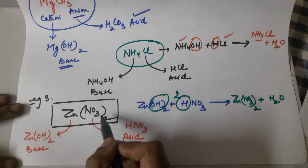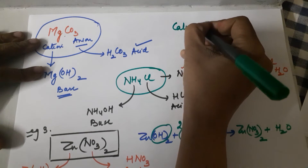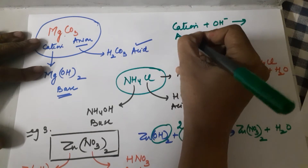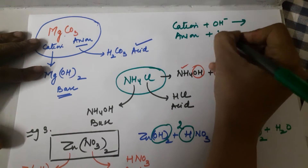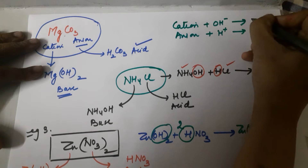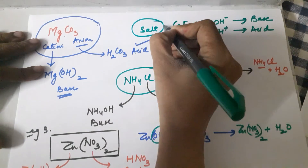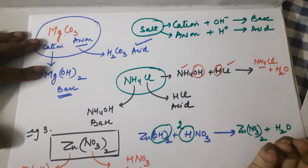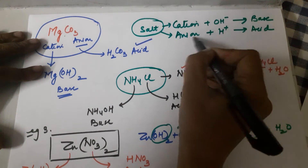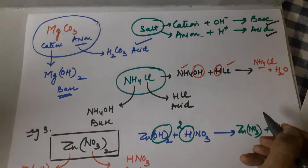So whenever you are asked which acid and base are required for a given salt: take the cation, add hydroxyl ions to make the base; take the anion, add H⁺ to make the acid. From any salt, identify the cation and anion, add OH⁻ and H⁺ respectively, and you get the acid and base required for that salt.